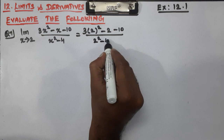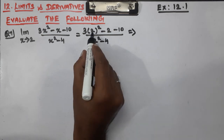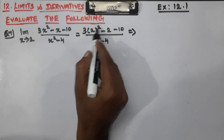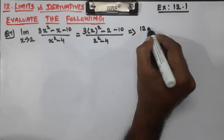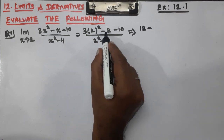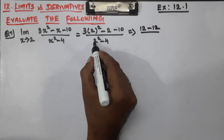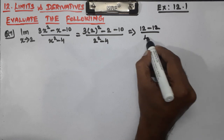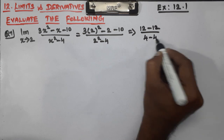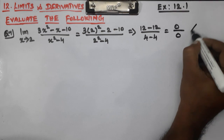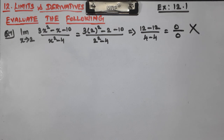2 squared is 4, so 3 into 4 is 12, minus 2 minus 10 equals 0 in the numerator. Denominator: 4 minus 4 equals 0. So we get 0 by 0. This answer is wrong.